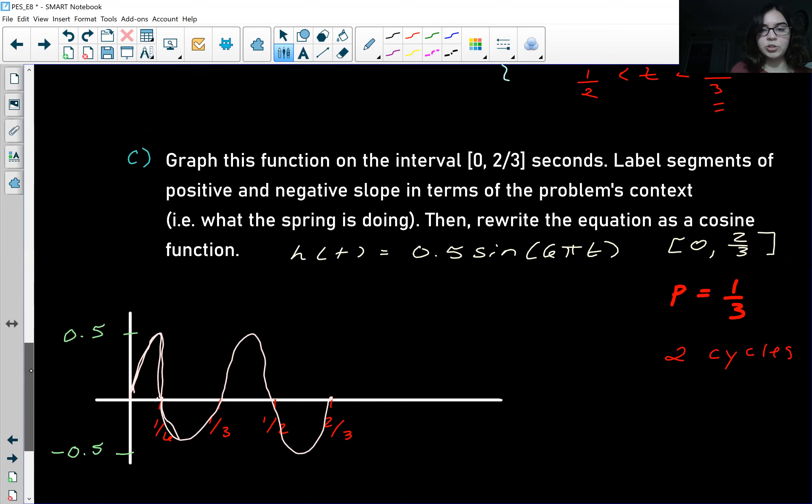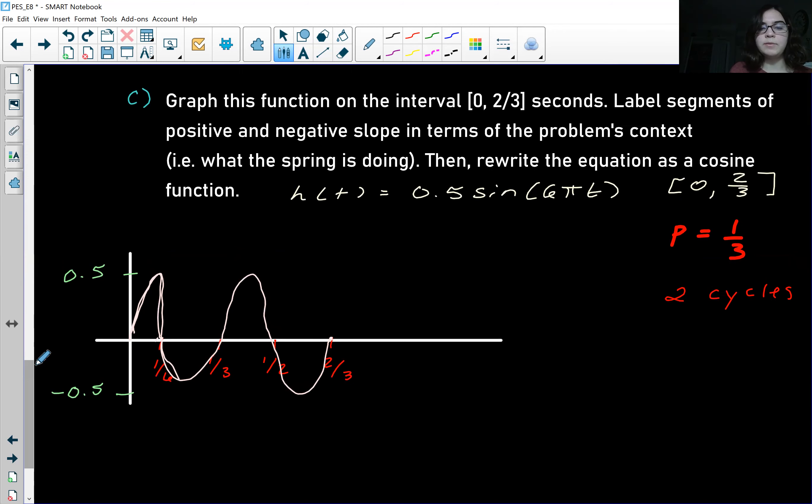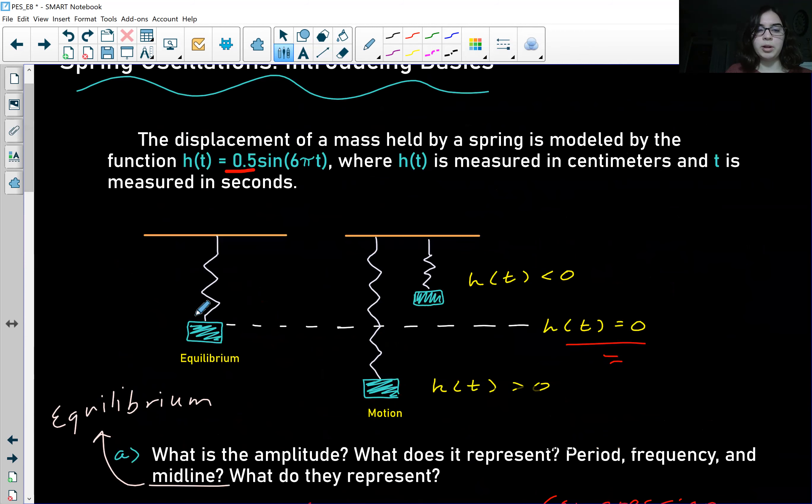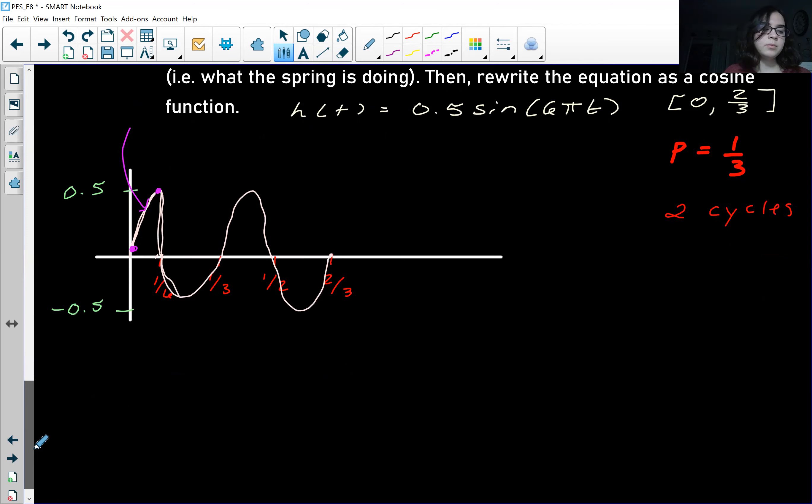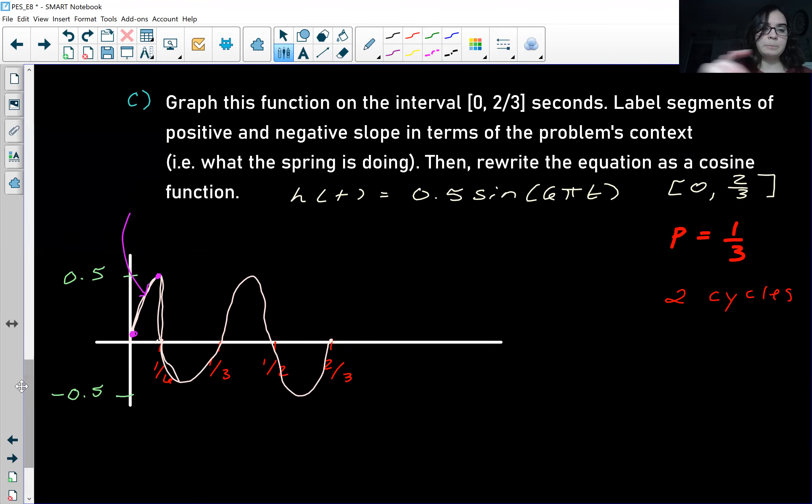Okay, the next part of this question. We want to label segments of positive and negative slope in terms of the problem's context. And I was kind of doing that when I was talking about what the spring was doing as I was drawing it. So here's a positive slope right here. So the segment from here to here, let's think about what the spring is doing. So it starts at equilibrium, and then it becomes positive. So at this point, it's becoming more and more positive. So in that interval, the spring is moving down.